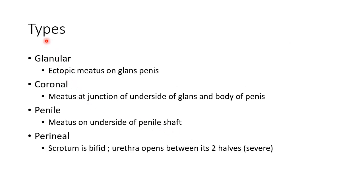Let us see about the types of hypospadias. In glandular hypospadias, the ectopic meatus is on the glans penis. In coronal hypospadias, the meatus is at the junction of the underside of the glans and body of the penis. In penile hypospadias, the meatus is on the underside of the penile shaft. In perineal hypospadias, the scrotum is bifid and the urethra opens between the two halves of the scrotum. This is the most severe type of hypospadias.